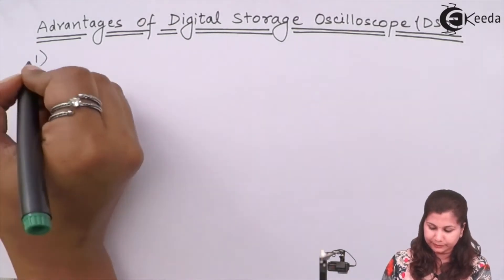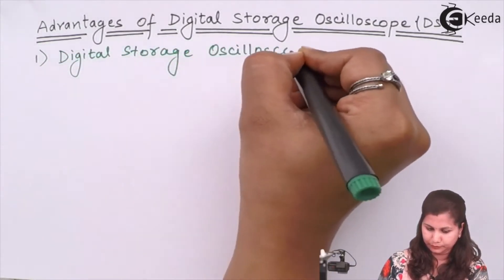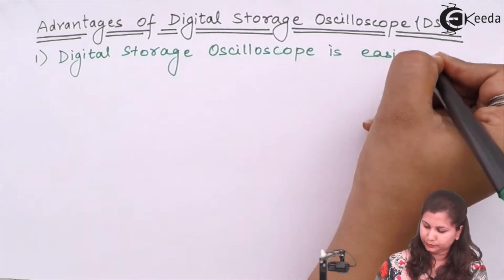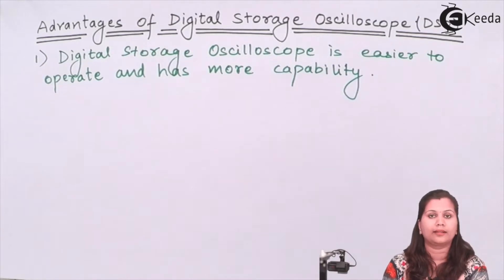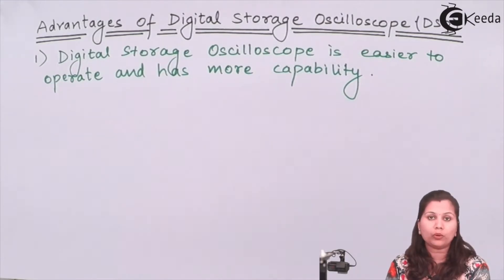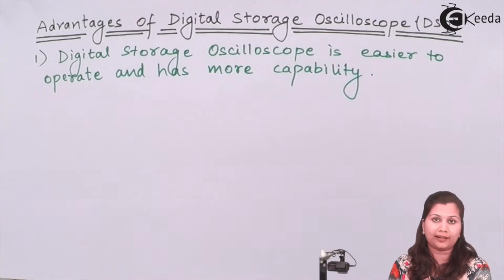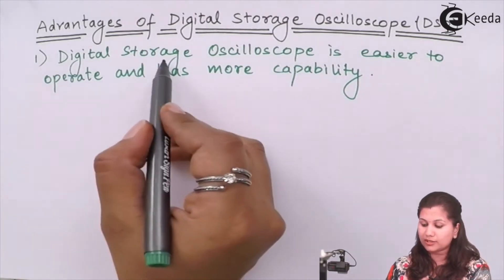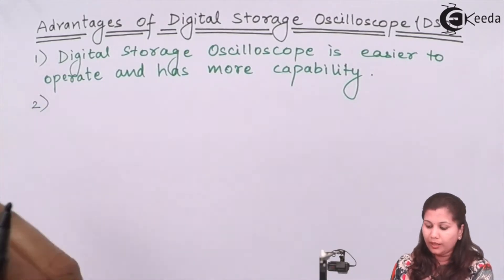The first advantage is that the digital storage oscilloscope, or DSO, is very easy to operate and also has more capability than the conventional CRO. Because it deals with digital signals, its processing speed is very high and it displays the waveform within a few seconds compared to analog oscilloscopes.